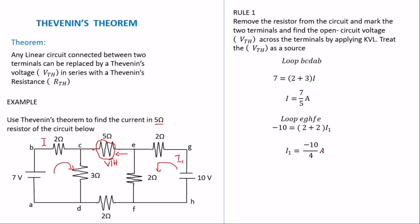Now we take the last loop, which involves Vth — loop CEFD. We regard Vth as the main source passing current I through it. Current will not flow through the open branch, so we do not involve that 2-ohm resistor. Applying KVL: Vth = 3I − 2I₁, because Vth opposes the 2-ohm resistor drop. With I = 7/5 and I₁ = −10/4, we get Vth = 46/5 volts, which equals 9.2 volts.